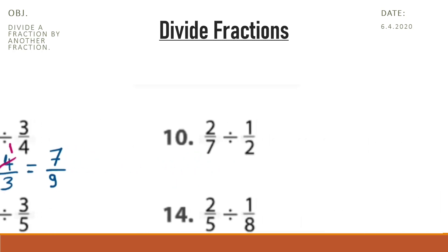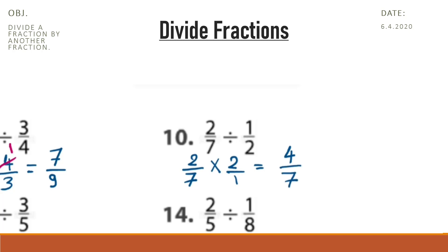In question number 10, the dividend is 2 sevenths. Change division into multiplication and the reciprocal of 1 half is 2 over 1. I will multiply 2 by 2 — it will be 4, and 7 by 1 is 7. The answer is 4 sevenths.